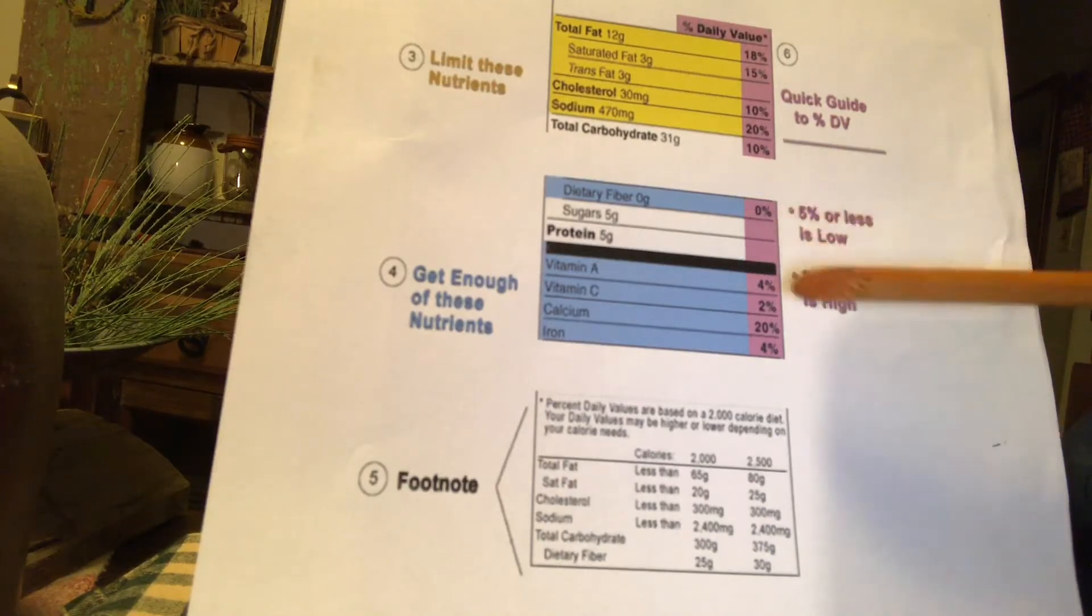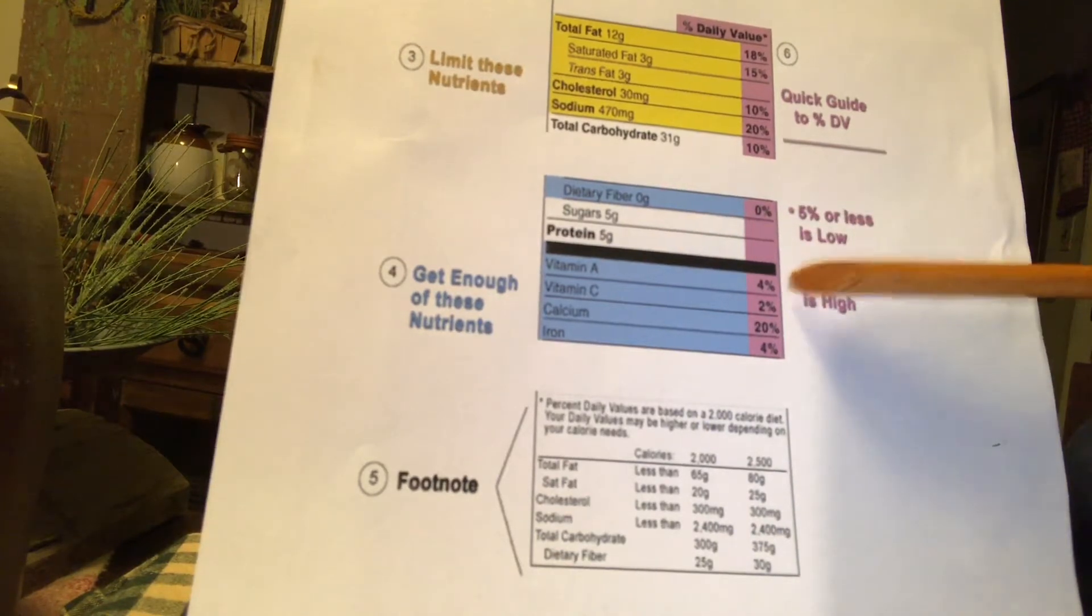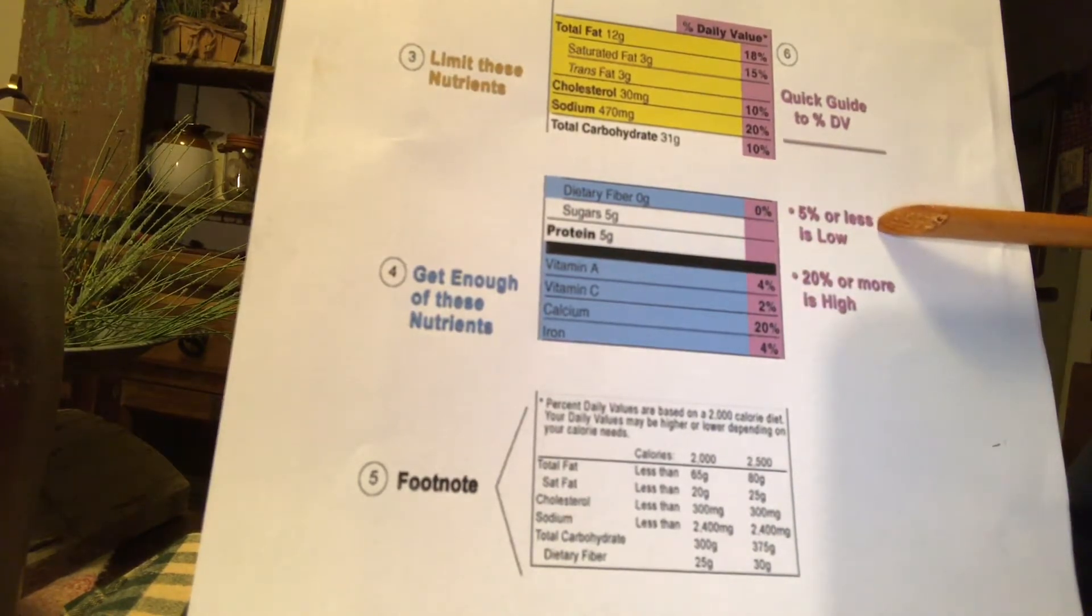Even with, if you ate the whole box and you doubled these numbers, the, for example, the vitamin A would be there for 8%. Still falls under a fairly low amount for it being a product to give you vitamin A.